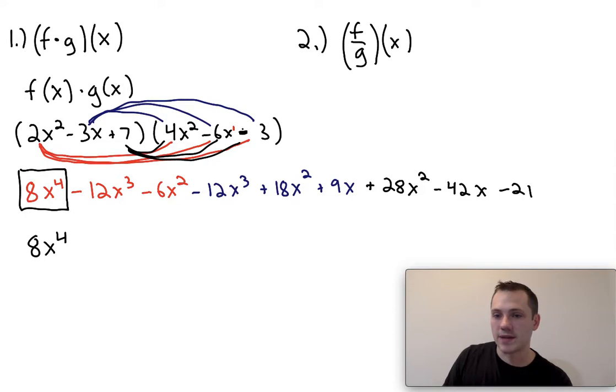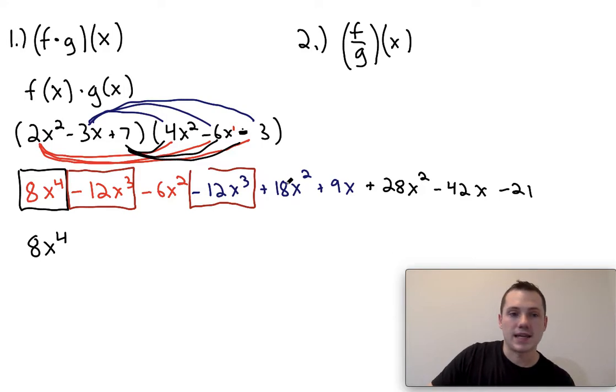In a different color, I'm going to go ahead and box anything that has an x to the third in it. So I'm going to box this. I'm also going to box this. And that's it. So it's just going to be those two values that have x to the third. Now if I have negative 12x to the third minus 12x to the third, that's going to be minus 24x to the third. Notice I'm just adding the coefficients. I'm not doing anything with the exponents when I'm adding.